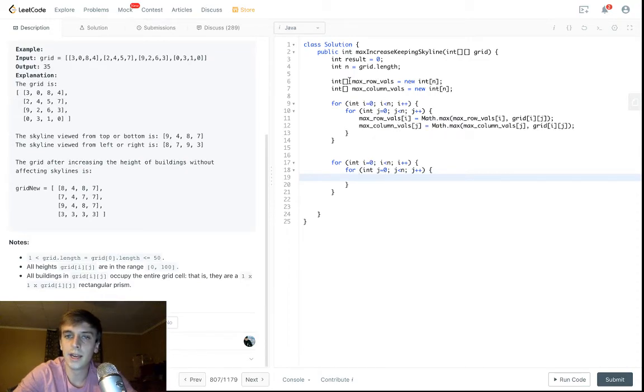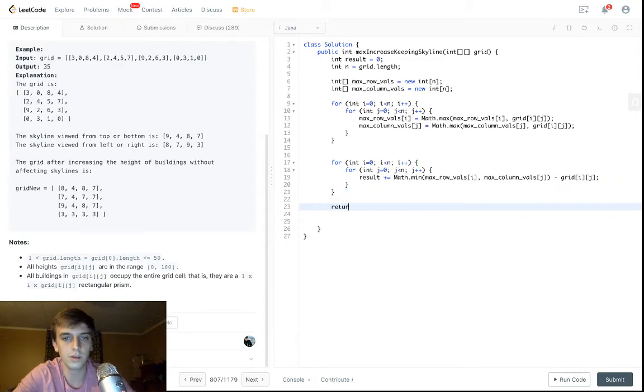And now once you have all these, you have all the max row vals and the max column values, so we just use the formula from earlier. We do result plus equals the minimum of those values, the minimum of the current max row val, max row vals of i and max column vals of j minus grid of i of j. And that should be it, and then you return the result. I feel like I messed up, I just have a bad feeling, but I also made, nope, there we go. Perfect.